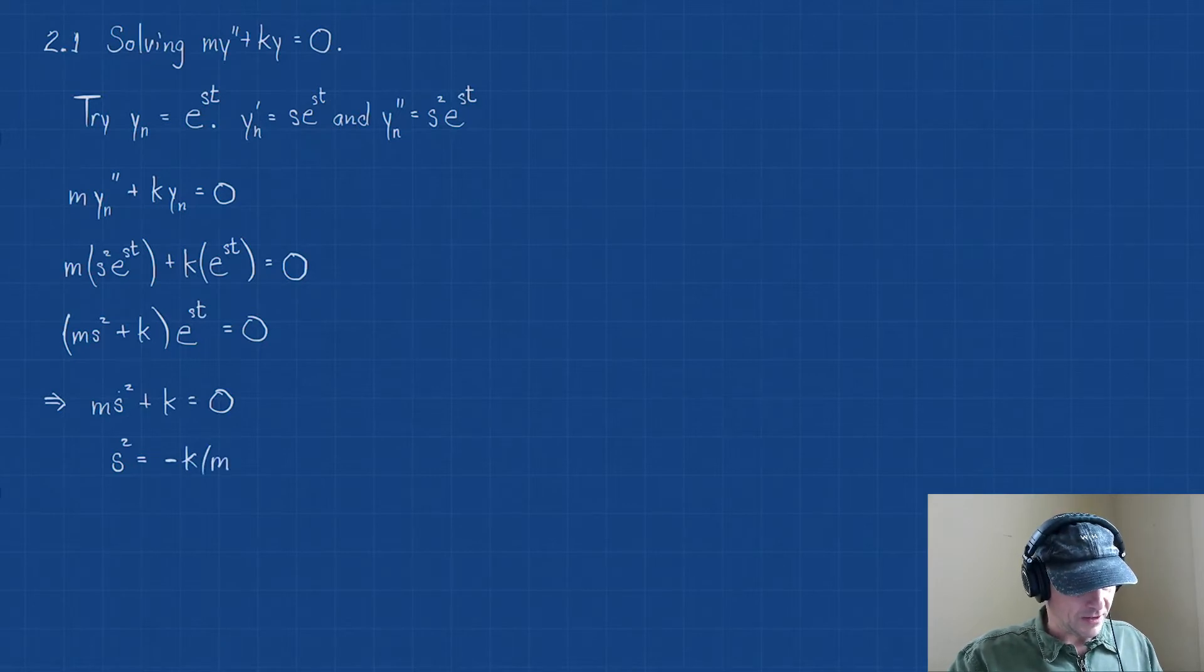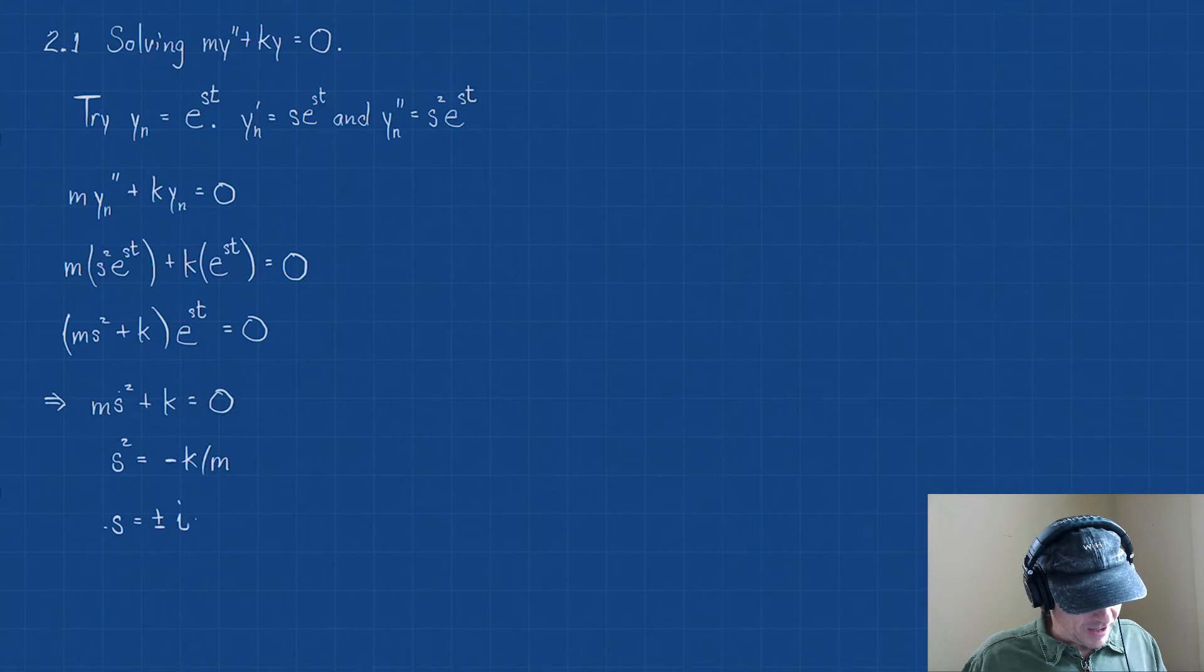Let's take the square root. This is going to give us something maybe a little unexpected. That is, s = ±√(-k/m), and we're taking the square root of a negative, so that's going to give us i·√(k/m).